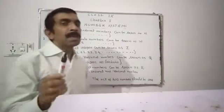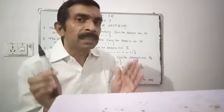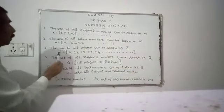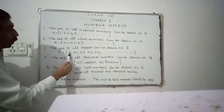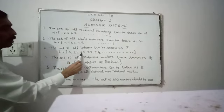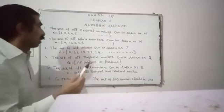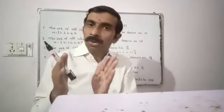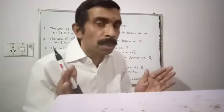Then, in previous year, we learned integers. We will represent integers from here. Z is equal to 0, plus or minus 1, plus or minus 2, plus or minus 3, plus or minus 4, etc. All positive and negative natural numbers and also including 0. All are called integers.